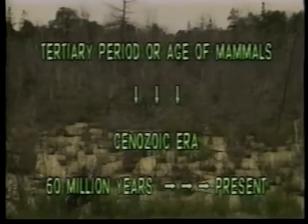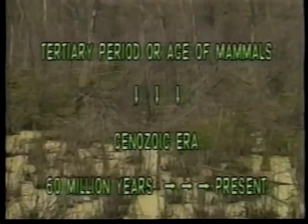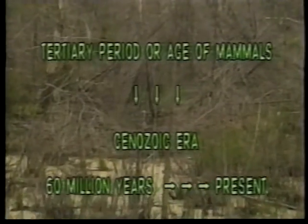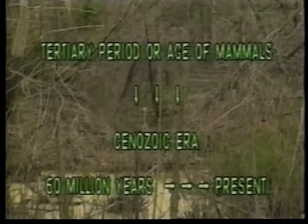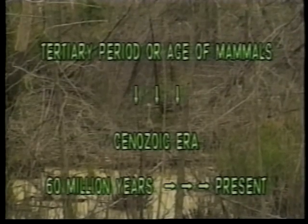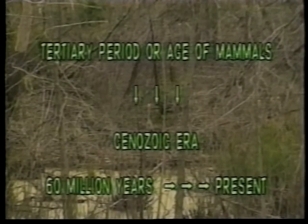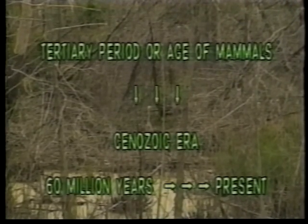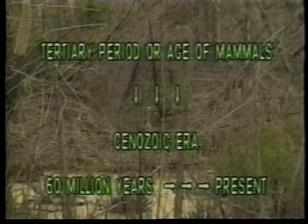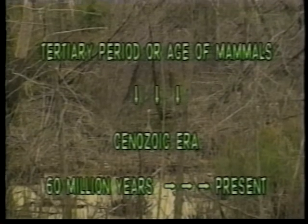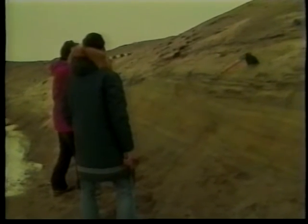For example, the Tertiary period, or age of mammals, was in the Cenozoic era — an era from about 60 million years ago to the present. By defining various eras and periods, scientists have been able to classify many features about the Earth and its formation.